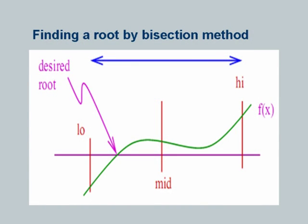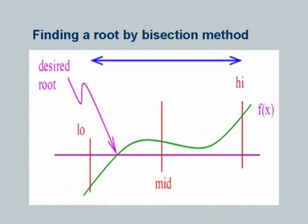Assume the real root is somewhere here — this is the desired root which we do not know at the beginning. So we start with a guess of one value on one side of the root and another value on the other side. If here is the root, on one side the function takes negative values — we choose a point LO or low on that side — and on the other side the function takes positive values — we choose a point called high. If the function value at high is positive and at low is negative, then between low and high it must cross 0, which will be my root.